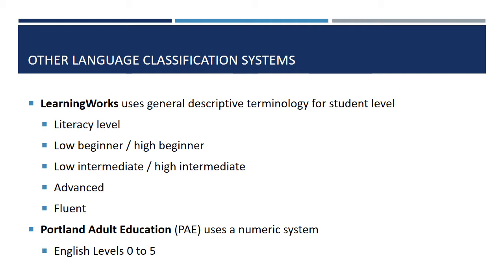A low intermediate or high intermediate student is working on things like more advanced grammar, verbs, and fullness of sentences while expressing themselves. Advanced and fluent students are the high-level learners most likely able to work in English-speaking environments or enroll in English-speaking schools or courses of study, perhaps at the university level. At Portland Adult Education, they use a numeric system — a level zero learner would be at the literacy level, and someone very advanced or fluent might be in a level five class. Both descriptive lists correspond to the stages of language acquisition we just looked at, though they are specific to the programs that use them.